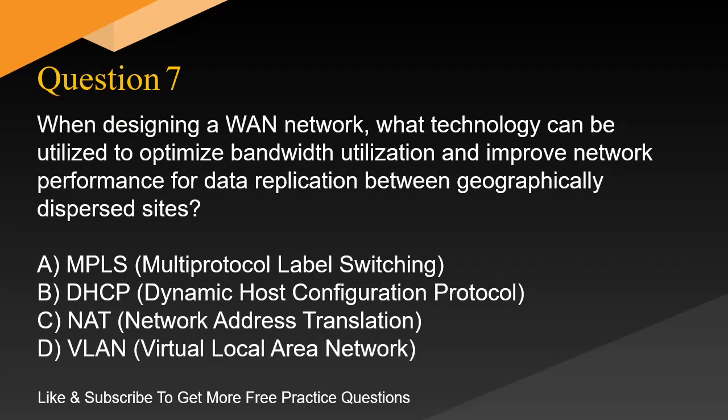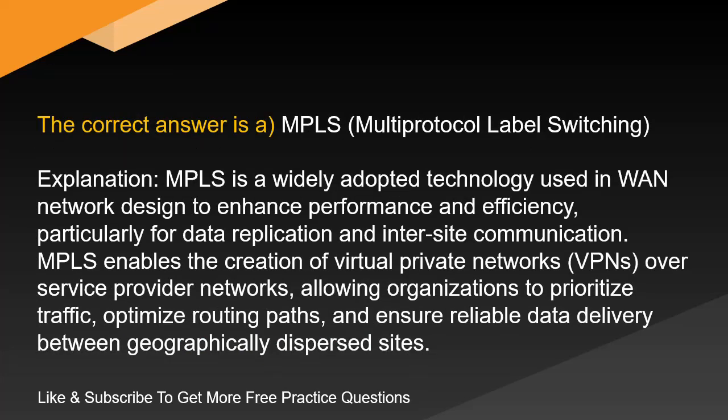Question 7. When designing a WAN network, what technology can be utilized to optimize bandwidth utilization and improve network performance for data replication between geographically dispersed sites? A. MPLS, Multi-Protocol Label Switching. B. DHCP, Dynamic Host Configuration Protocol. C. NAT, Network Address Translation. D. VLAN, Virtual Local Area Network. The correct answer is A: MPLS. MPLS is a widely adopted technology used in WAN network design to enhance performance and efficiency, particularly for data replication and inter-site communication. MPLS enables the creation of virtual private networks, VPNs, over service provider networks, allowing organizations to prioritize traffic, optimize routing paths, and ensure reliable data delivery between geographically dispersed sites.